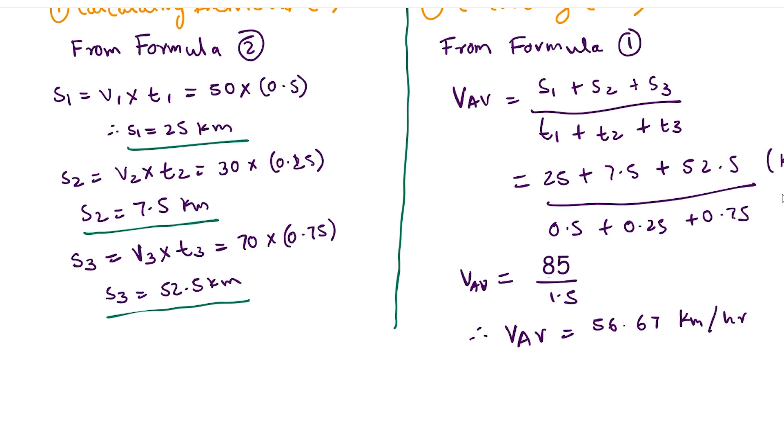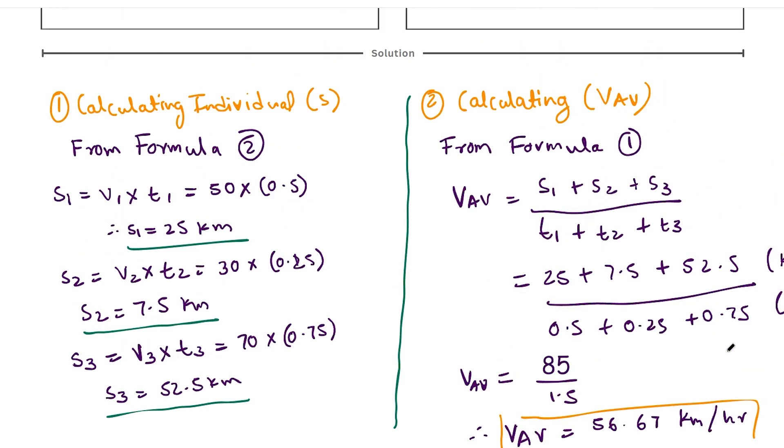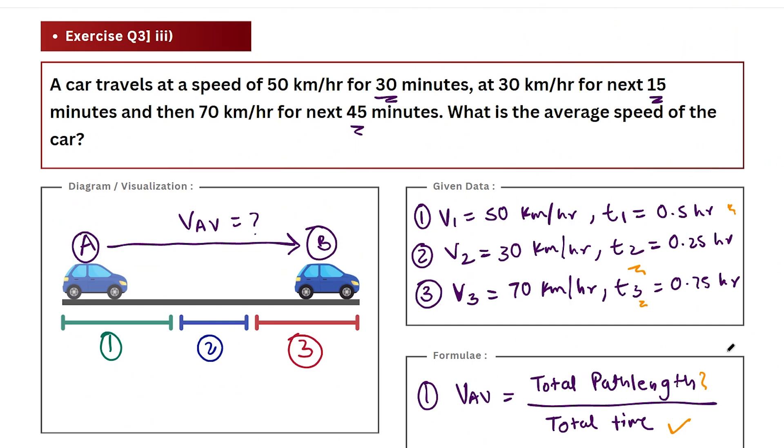So with this we have the quantity that was required. The task that was assigned to us was to calculate the average speed of this journey, that is journey from location A to B for our car. So that's it, make sure you write the final statement for this.